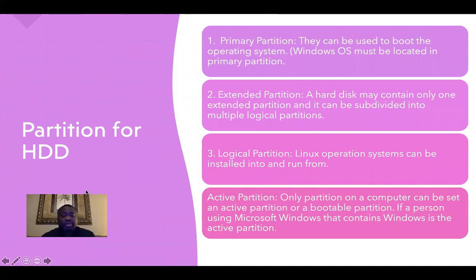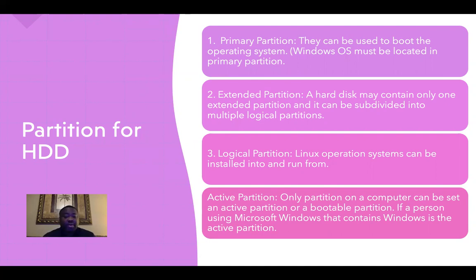Now the partitions for the hard disk drive. We'll start from the primary partition — it can be used to boot the operating system. Windows OS must be located in a primary partition. The extended partition: a hard disk drive may contain only one extended partition, and it can be subdivided into multiple logical partitions. A logical partition, like the Linux operating system, can be installed into and run from. The active partition: only one partition on a computer can be set as the active or bootable partition. If a person is using Microsoft Windows, the partition that contains Windows is the active partition.